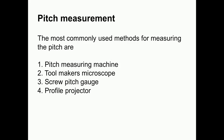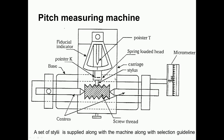We will start with the measurement of screw thread pitch. The most commonly used methods are: pitch measurement using the pitch measuring machine, use of tool makers microscope, use of screw pitch gauge, and use of profile projector. This diagram shows the pitch measuring machine. We have the base made of cast iron — a very sturdy base — and then we have two centers provided for mounting the screw thread. There is a carriage which will move parallel to the axis, and in the carriage there is a stylus mounted on a spring loaded head. We have two indicators.